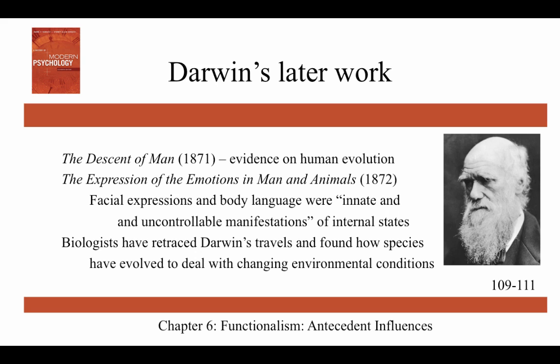In Darwin's later work, he followed up with The Descent of Man in 1871, providing evidence for human evolution. Many people were shocked; a famous quote reads: 'Let us hope that it is not true, but if it is, let us pray that it will not become generally known.' The following year came The Expression of Emotions in Man and Animals, where Darwin argued that facial expressions and body language were innate and uncontrollable manifestations of internal states — so pain was accompanied by a grimace and pleasure by a smile.